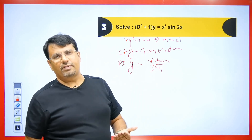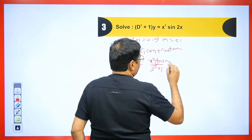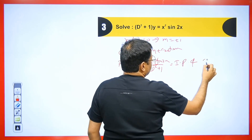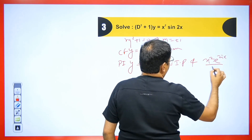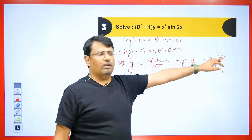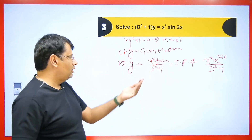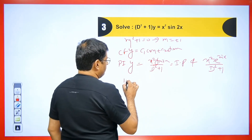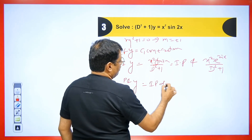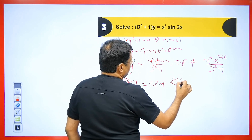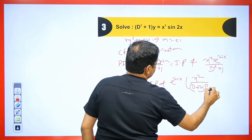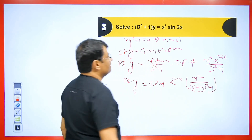If sin is given we take the imaginary part; if cos is given we take the real part. So we write: PI = Imaginary Part of [x²·e^(2ix) / (D²+1)]. We take e^(2ix) outside, replacing D with (D+2i): PI = Imaginary Part of e^(2ix) · [x² / ((D+2i)²+1)]. Expanding: (D+2i)² + 1 = D² + 4i·D + 4i² + 1 = D² + 4i·D − 4 + 1 = D² + 4i·D − 3.